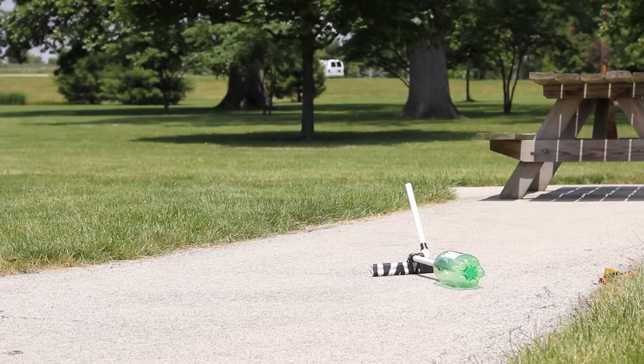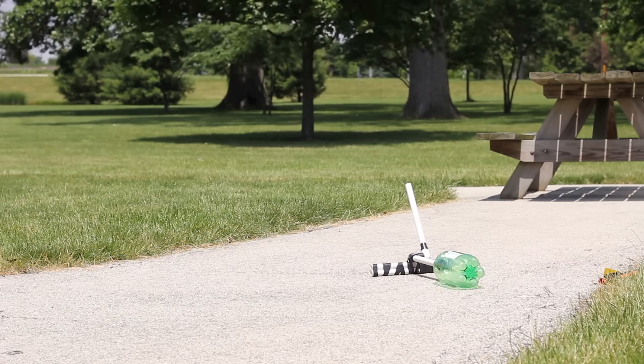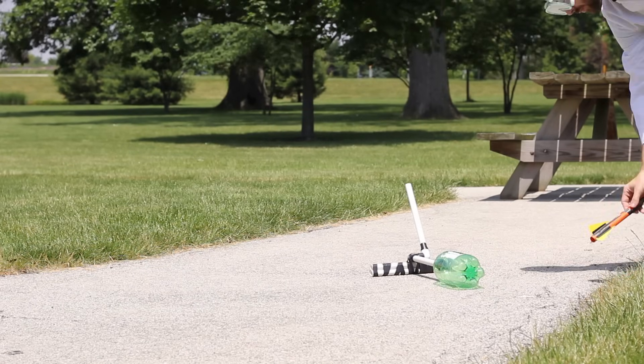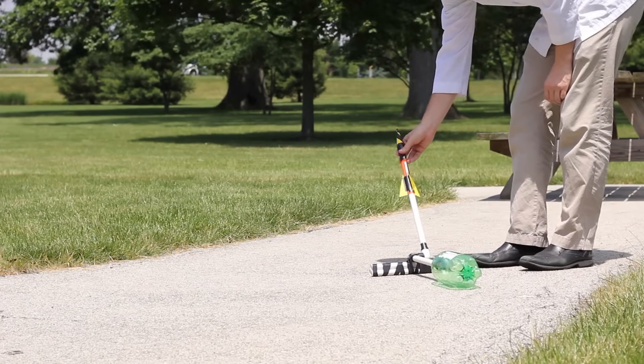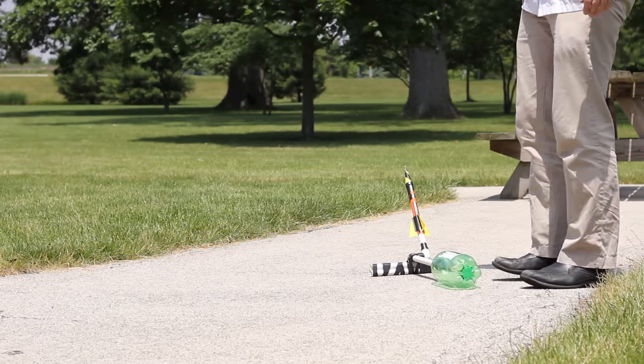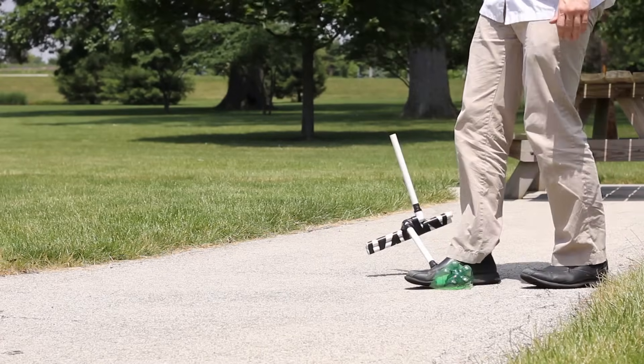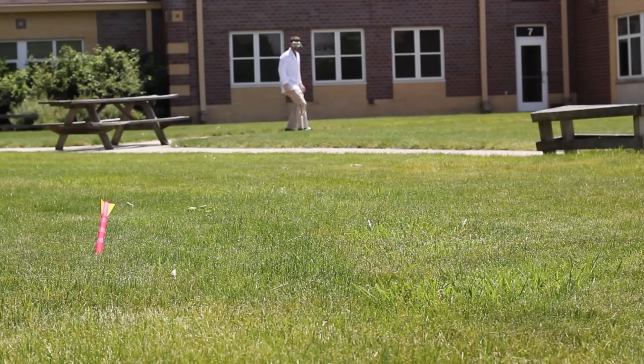These rockets have the ability to travel almost 100 yards, so it's a good idea to use eye protection and be outside when you're testing your rocket launcher. Load your rocket on the end of the 1 1⁄2 inch PVC pipe, and then stomp on the 2-liter bottle and watch it fly.